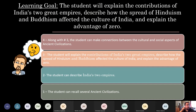Our learning goals today: students will explain the contributions of India's two great empires, describe how the spread of Hinduism and Buddhism affected India's culture, and explain the advantage of using zero. That last part carries over from last week's lesson. Hopefully you'll be at a three by the end; if you're at a one or two right now, that's perfectly fine — we'll work our way up.